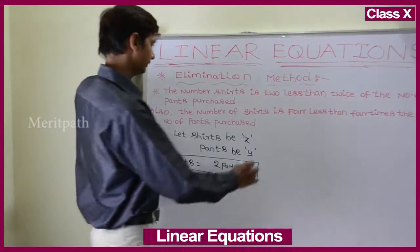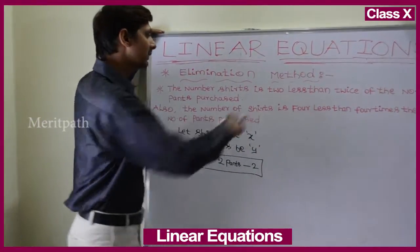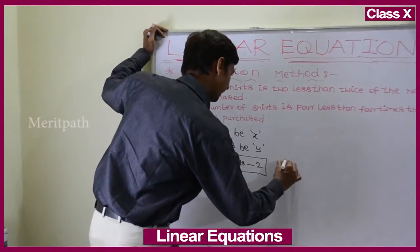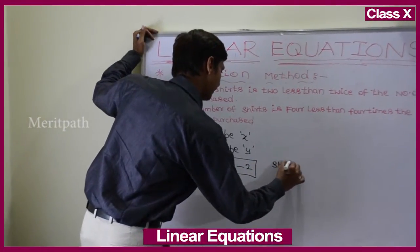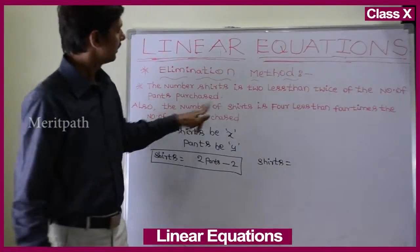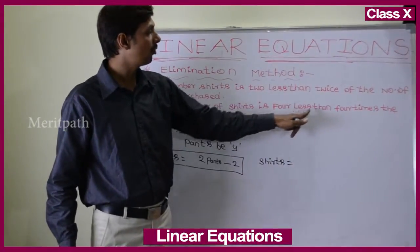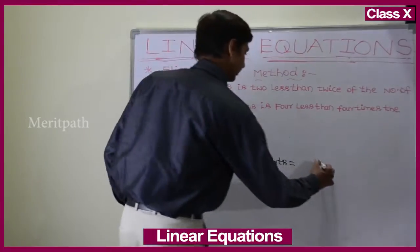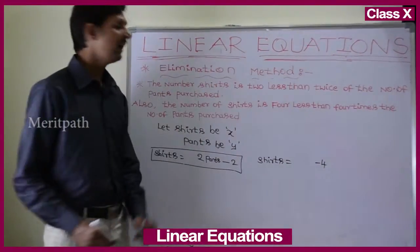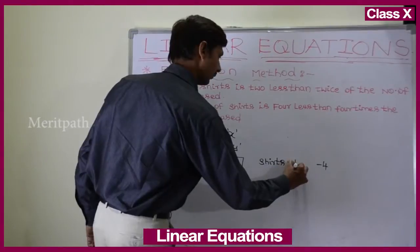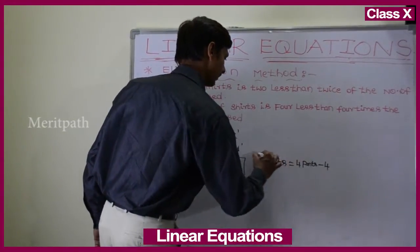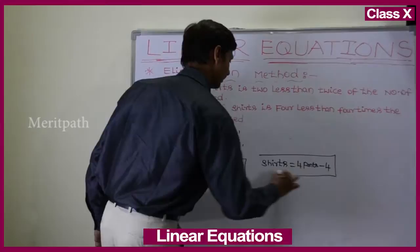The number of shirts is 4 less than 4 times the number of packs. So shirts equals 4 times packs minus 4. This is the second equation.